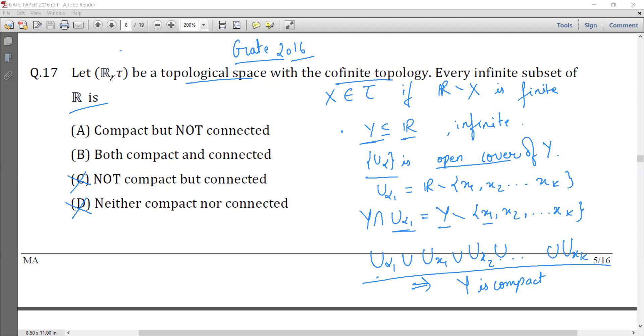Now let's see if this space is connected. If any infinite subset of R is connected. If Y were disconnected, we can write Y as union of two open sets U union V.